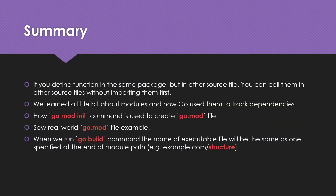In this video we learned that if you define functions in the same package but in a different source file, those functions can be called from any other source file within the same package without being imported. We also learned about modules and how Go uses them to track dependencies, how the go mod init command is used to create a go.mod file, and saw a real-world go.mod example. When you run go build, the name of the executable file will match the last part of the module path — for example, example.com/structure produces a file named structure.